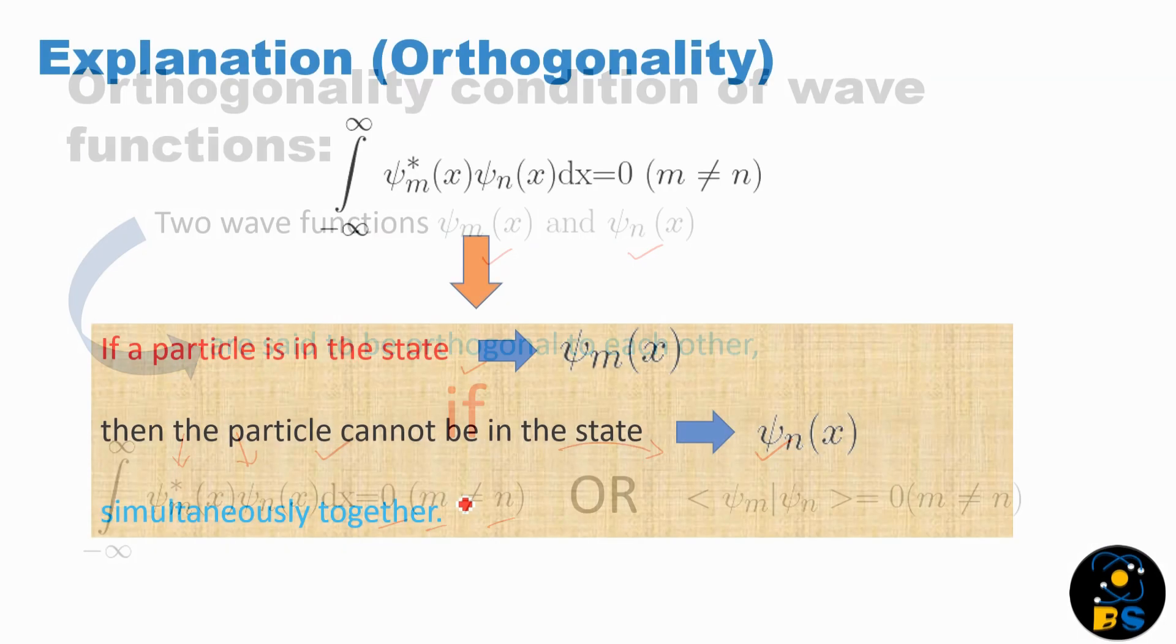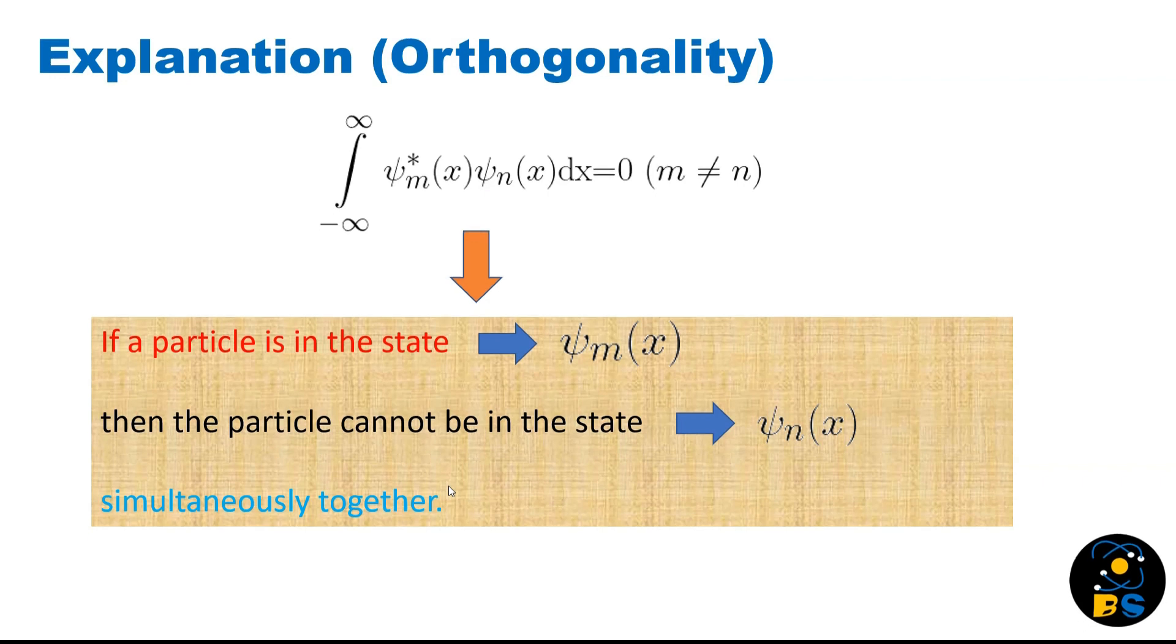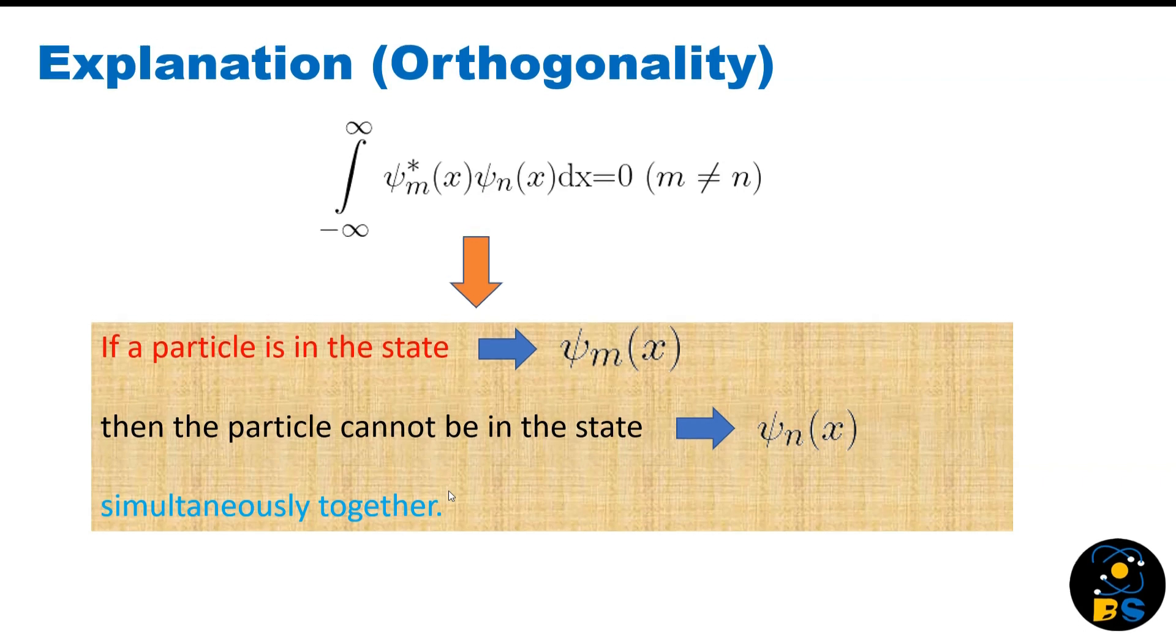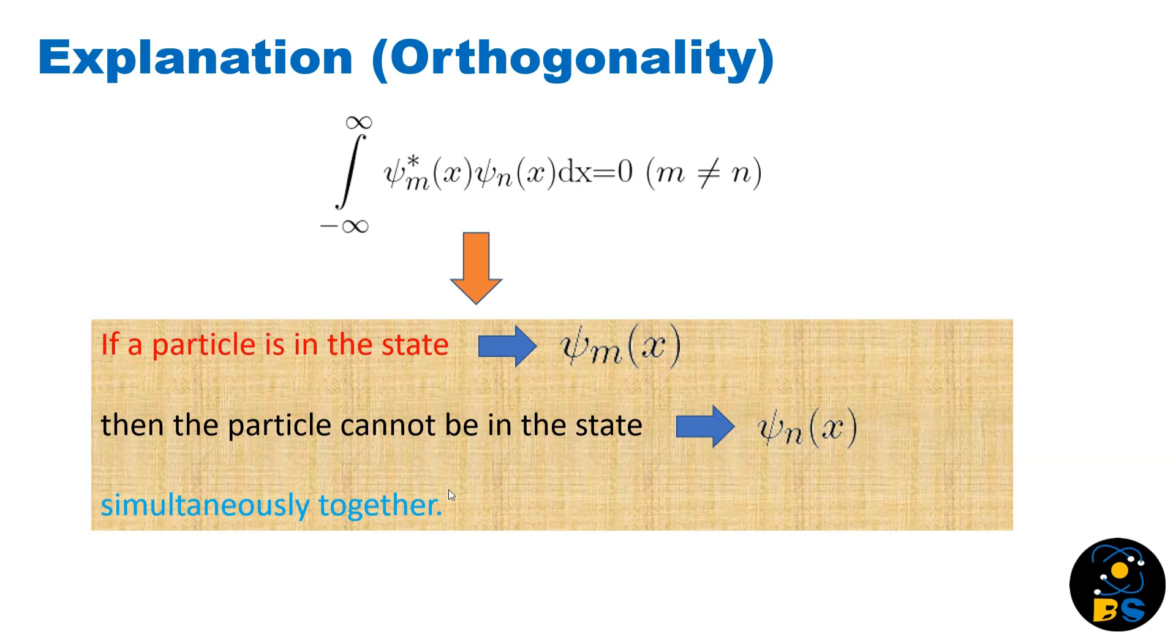The physical significance of the orthogonality condition says that if a particle is in state ψ_m, then it cannot be in state ψ_n simultaneously. This makes complete sense because a particle cannot be in different states at the same time. That is our orthogonality condition.